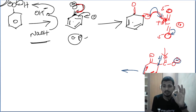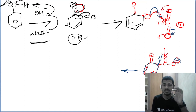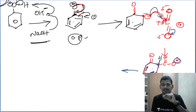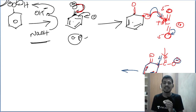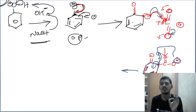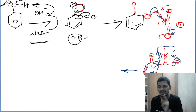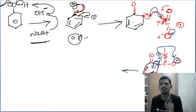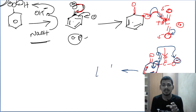We have two pi bonds in the benzene ring. So we have to fill the pi bond to maintain aromaticity. We have to donate the hydrogen. We attack O minus — we have to donate this H.